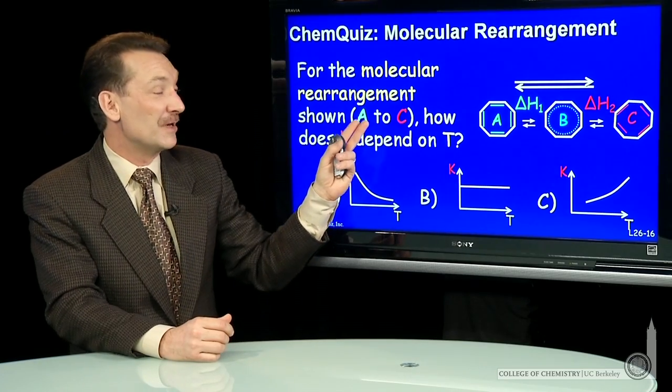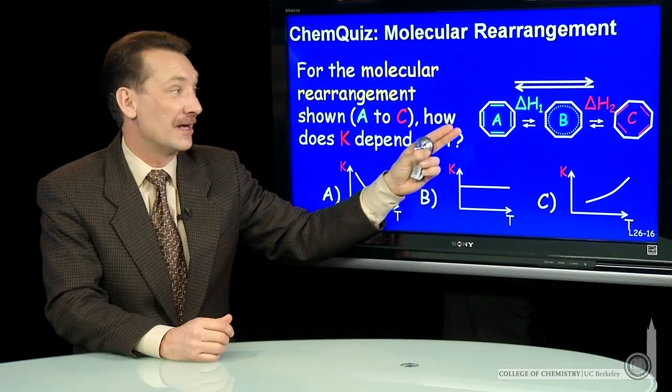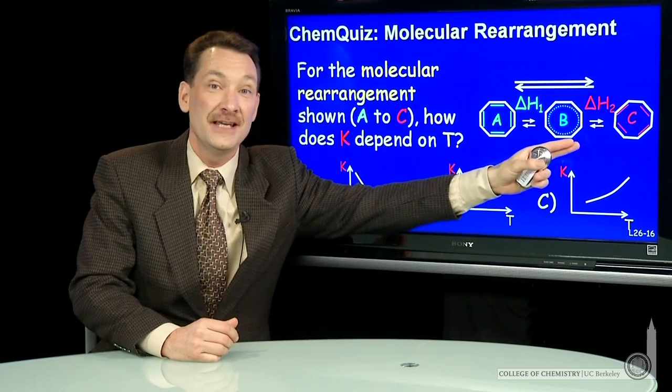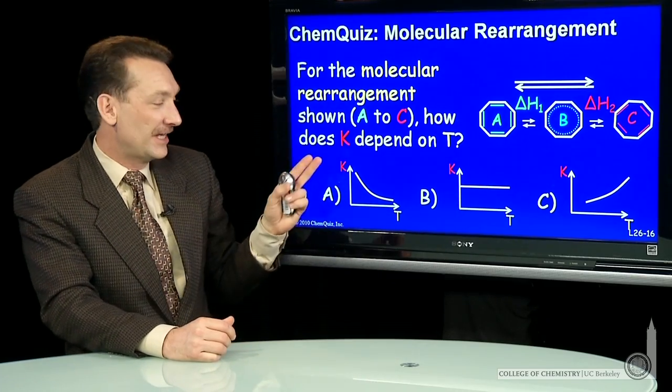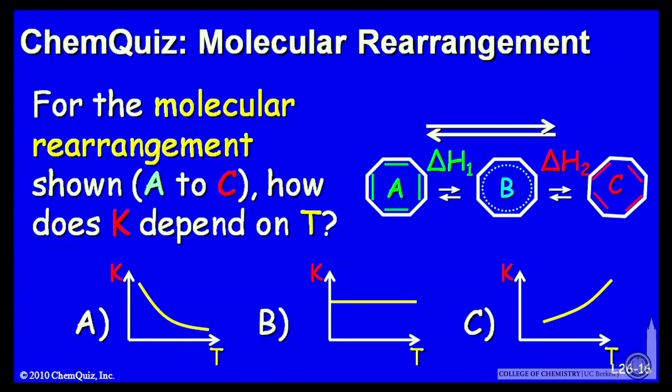For that rearrangement, what is the relationship between the overall equilibrium constant, A going to C, and temperature? K increase, decrease, or stay the same? Think about that for a minute and make a selection.